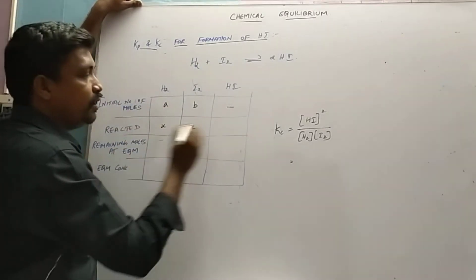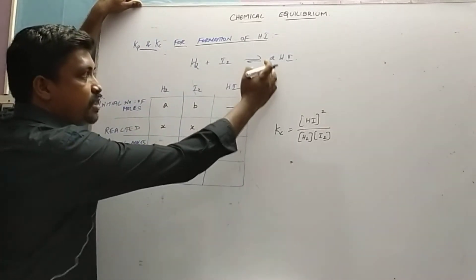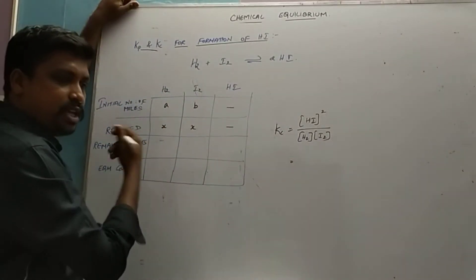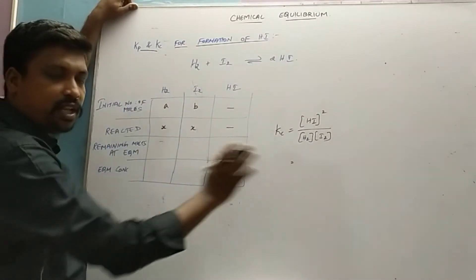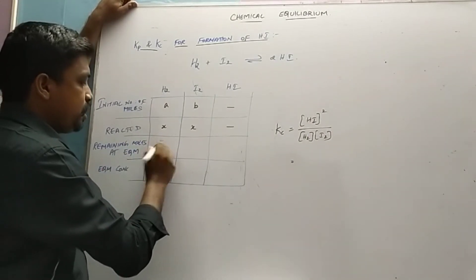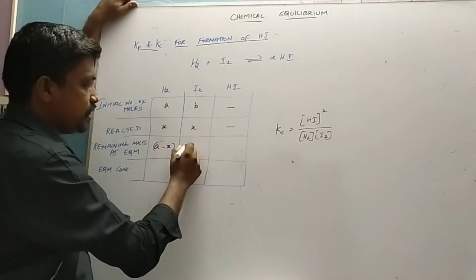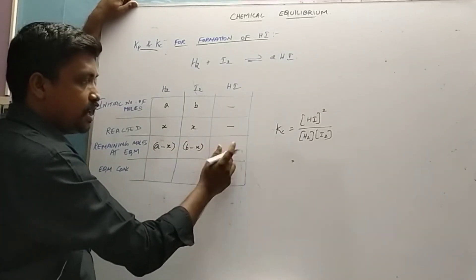For product it will be formed. At equilibrium, the remaining moles: initially a is present, x has reacted, so remaining is a minus x. Here it is b minus x.